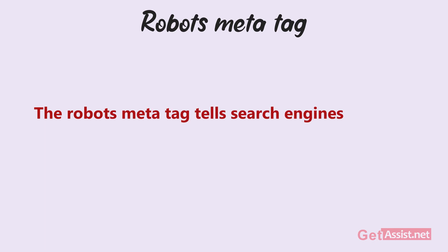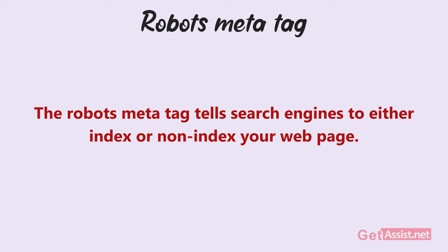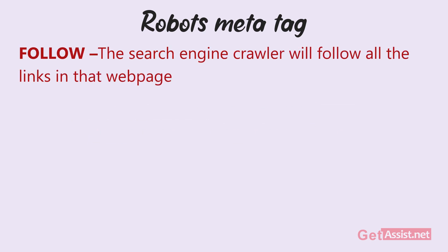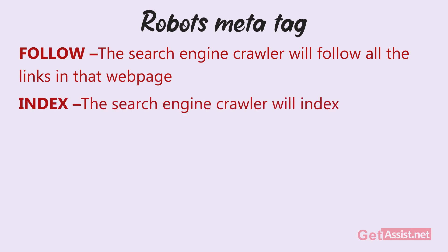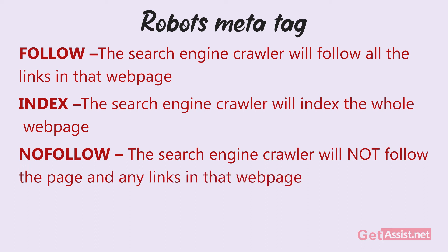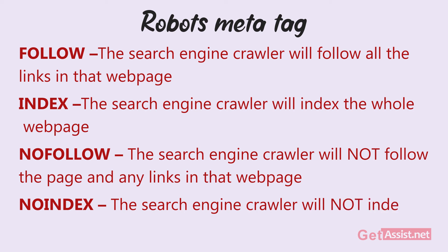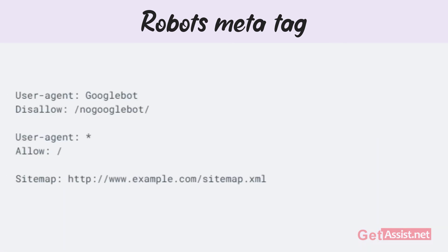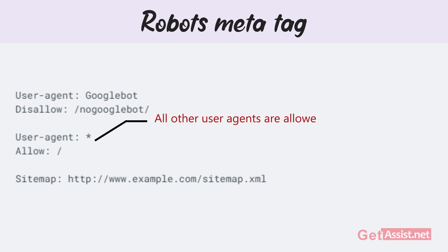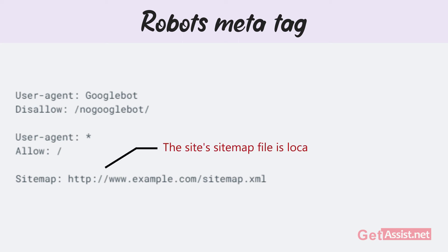The robots meta tag tells search engines to either index or not index your web page. The tag has four main values for search engine crawlers: first, follow — the crawler will follow all the links in that web page; second, index — the crawler will index the whole web page; third, nofollow — the crawler will not follow the page or any links in it; and fourth, noindex — the crawler will not index that web page. In the robots.txt file, the user agent named Googlebot is not allowed to crawl any URL starting with that link, while all other user agents are allowed to crawl the entire site. The default behavior is that user agents are allowed to crawl the entire site, and the site's sitemap file is located at the specified link.